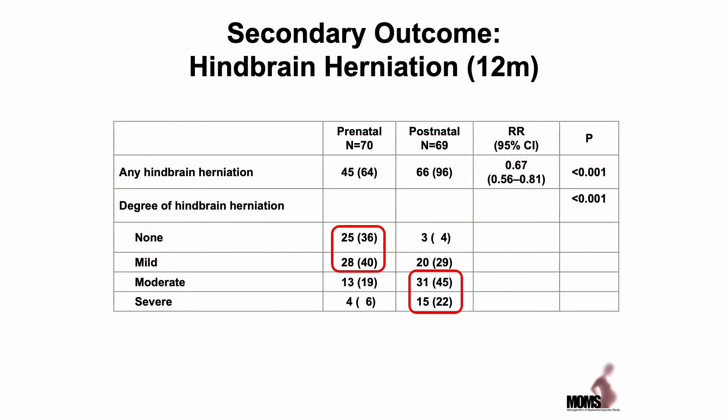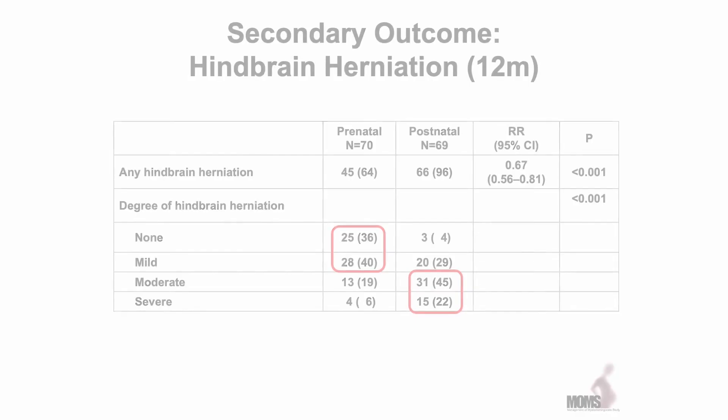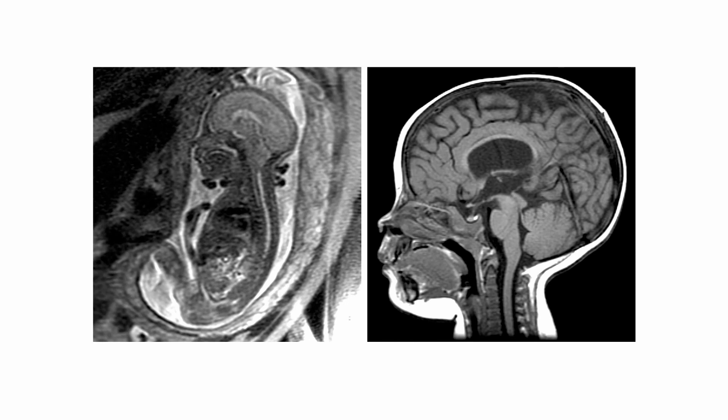The impact on hindbrain herniation was also significant. The number of patients in the prenatal group that had none or mild Chiari malformation was almost 80%, whereas it was only 30% in the postnatal group. The majority of patients in the postnatal group had severe hindbrain herniation. This is illustrated by a patient imaged by fetal MRI showing signs of a Chiari II malformation in utero, and then a subsequent postnatal scan showing virtually complete resolution of the Chiari II malformation and a normal configuration of the brainstem and cerebellum.